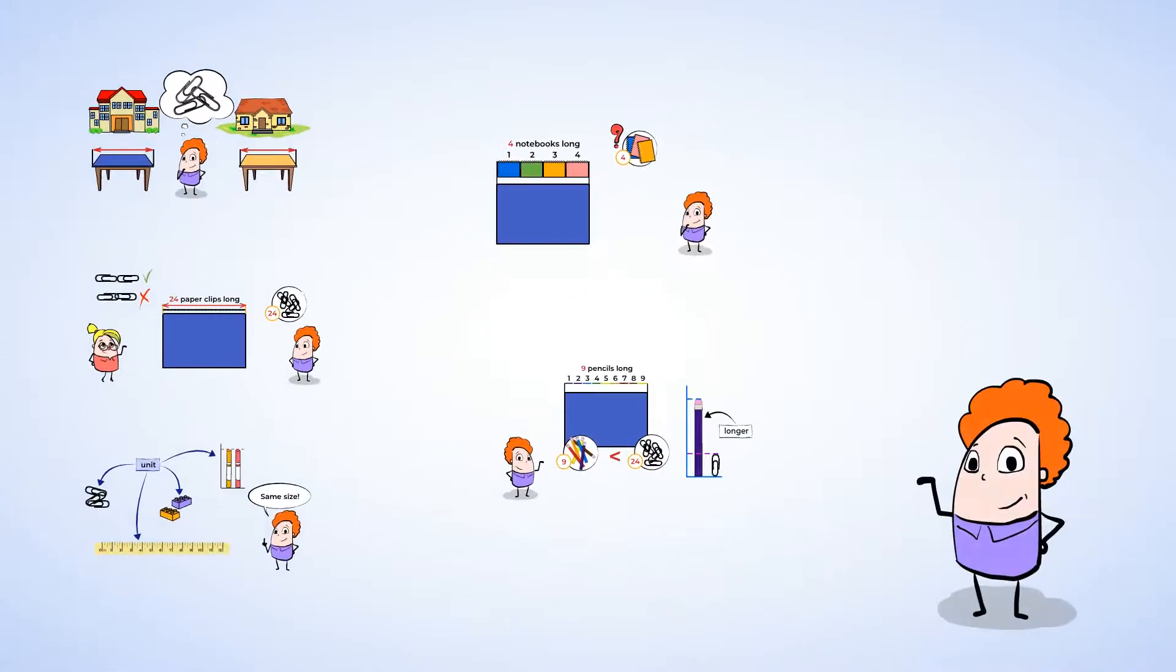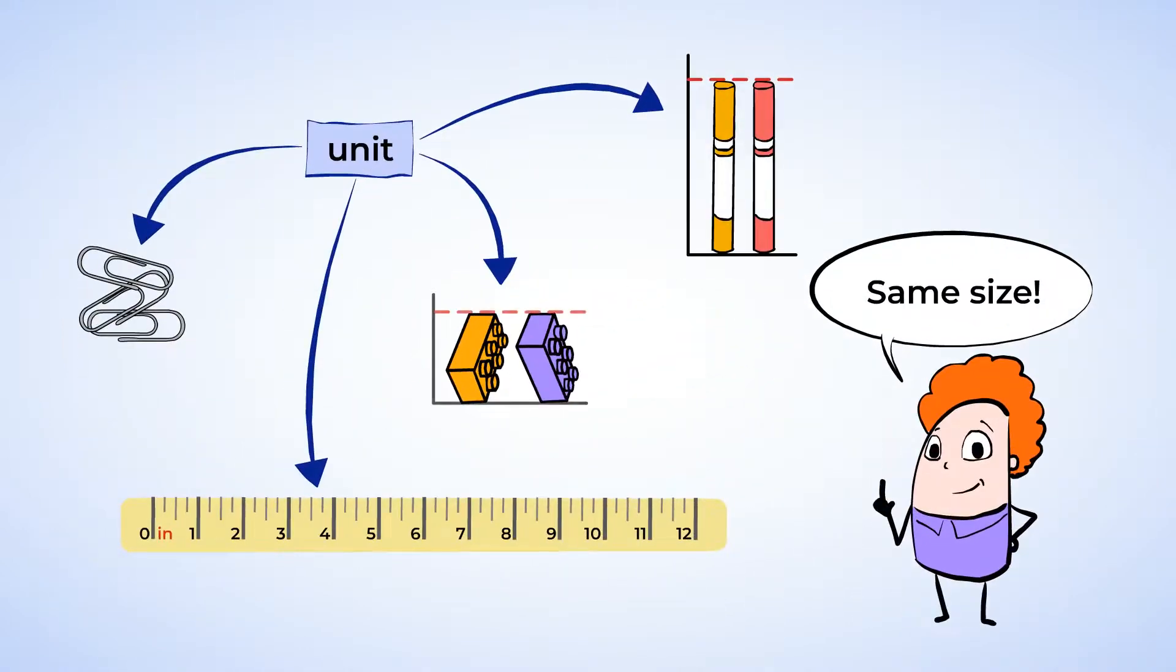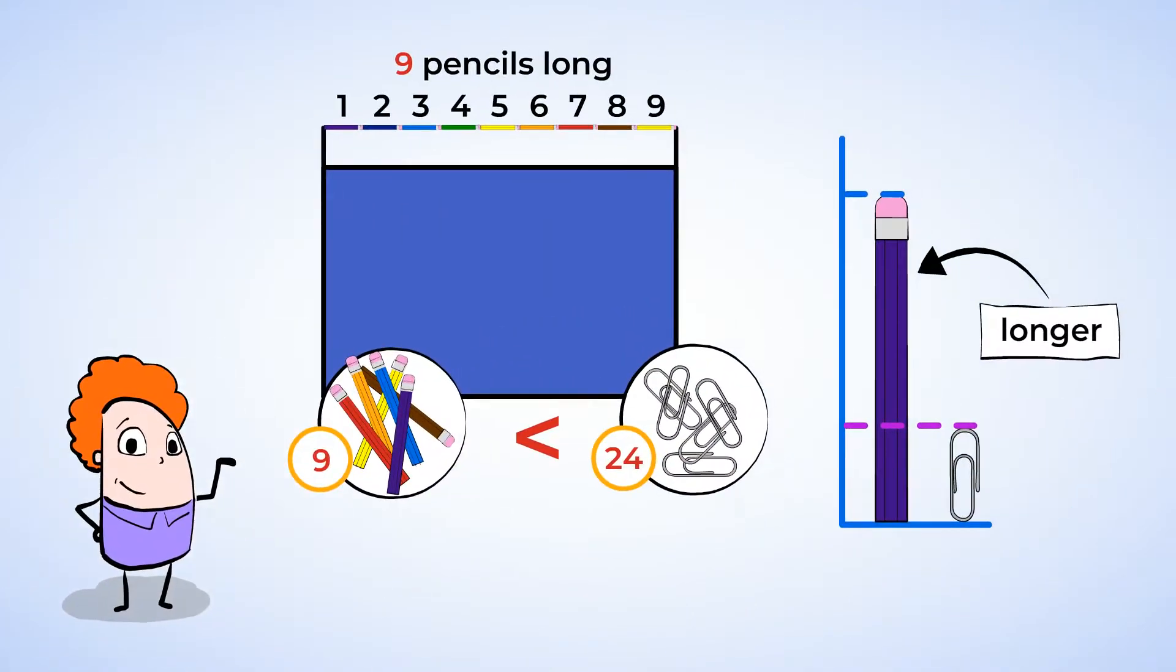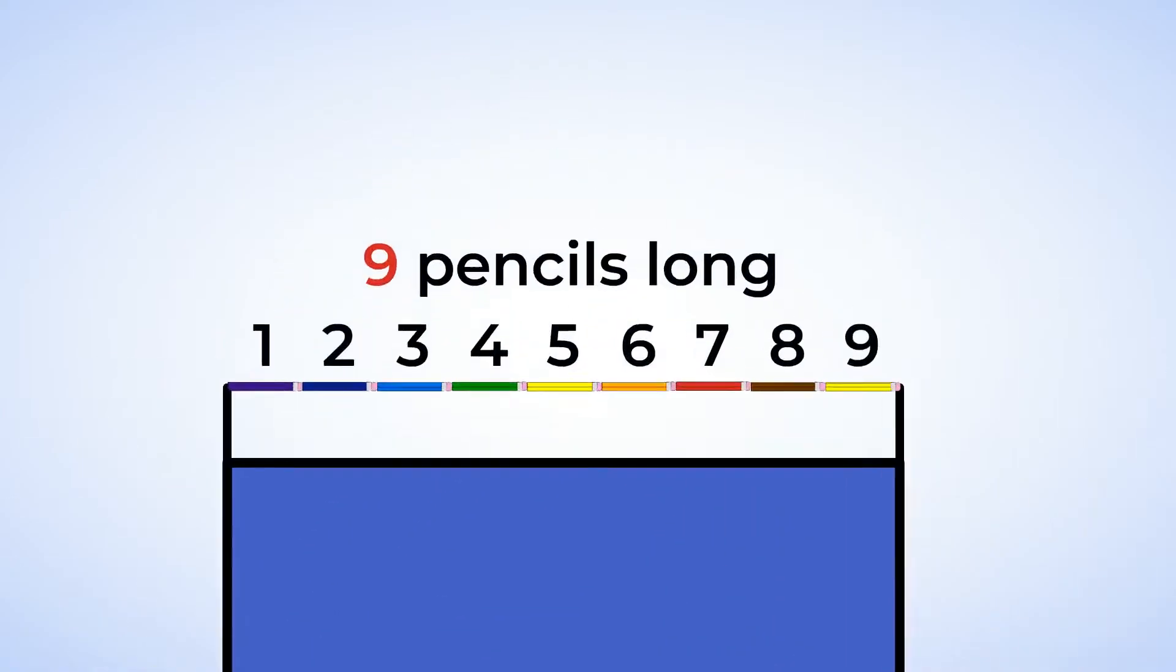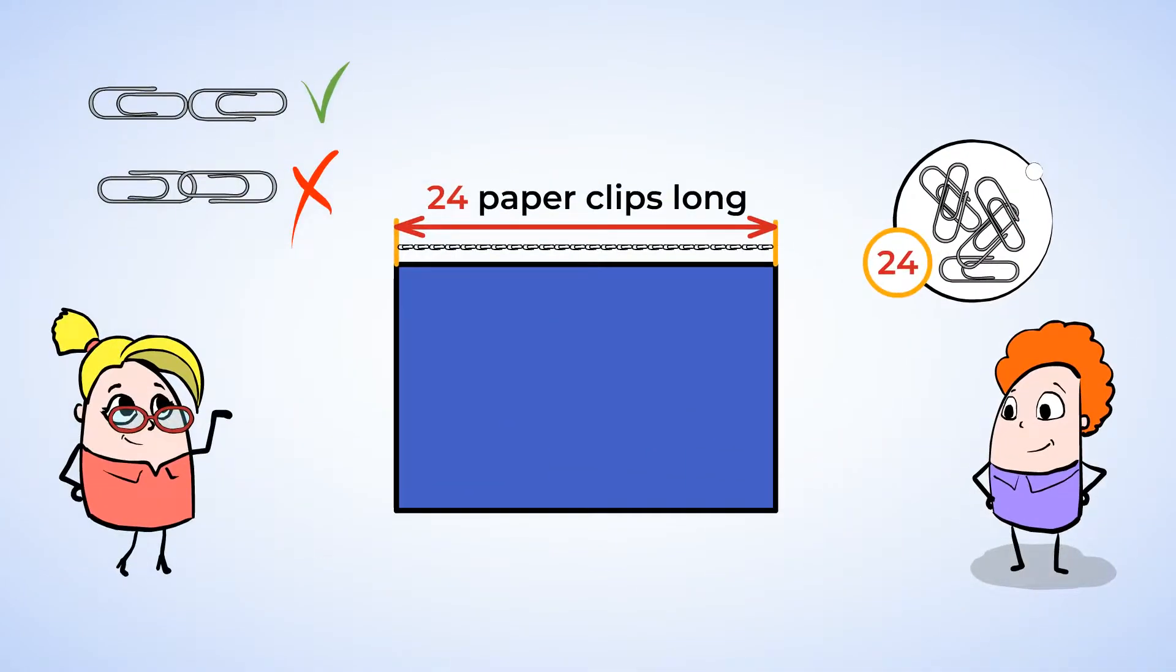Wow. Today we helped Eric to measure the length of his desk using paper clips, unsharpened pencils, and notebooks. And we learned some important rules when measuring. The unit used for measuring must be all the same size, like paper clips or unsharpened pencils. We now know that we need to lay them down in a straight line from one edge of the object we're measuring all the way to the other, and the units should touch each other without overlapping.